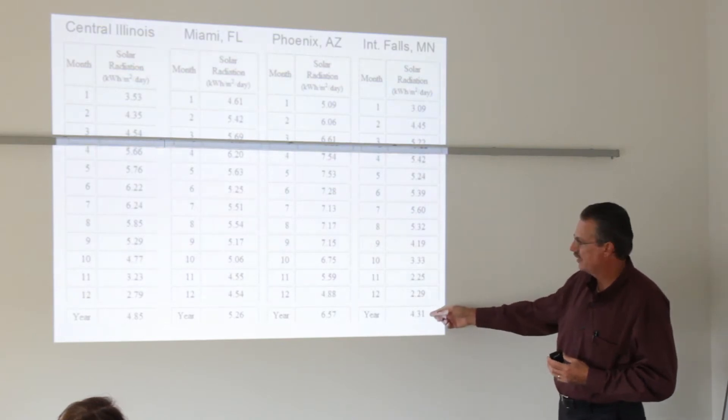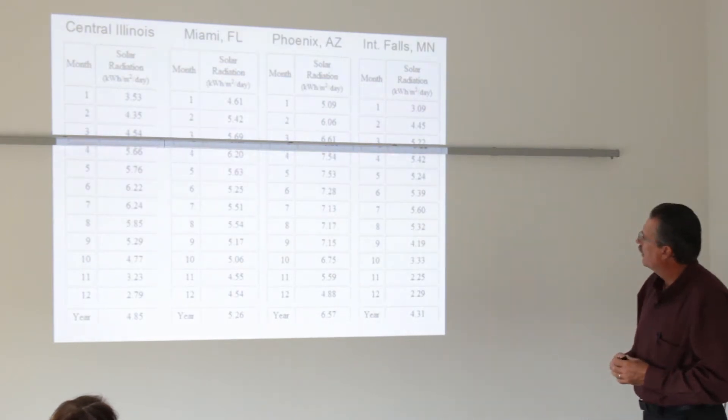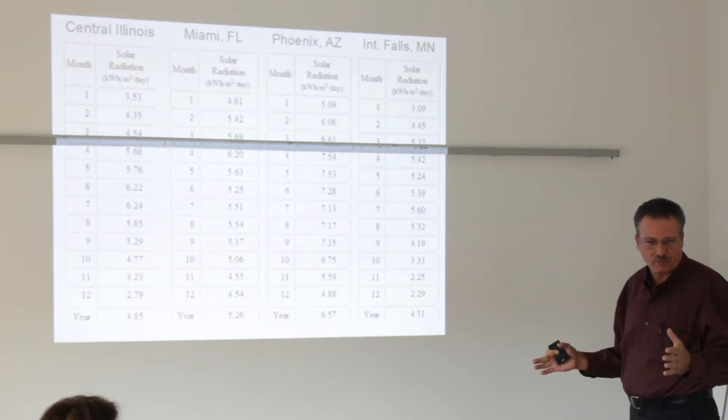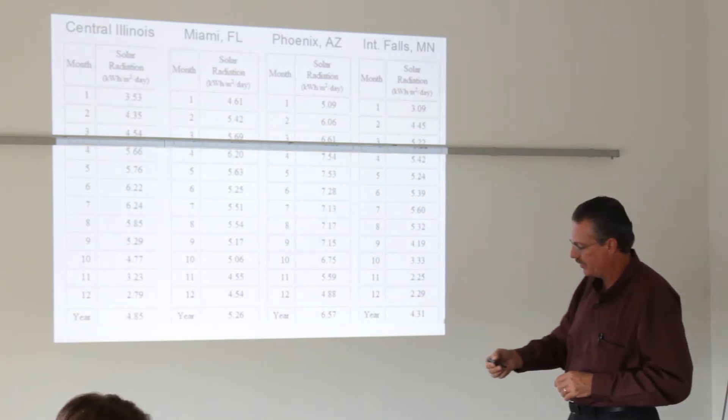International Falls, Minnesota, 4.31 compared to 4.85 for central Illinois. It's still very viable and you don't write it off. You just say we're not going to get as much energy per square meter so we're going to increase the size of the array to make up for a little less resource. So it works out quite well.